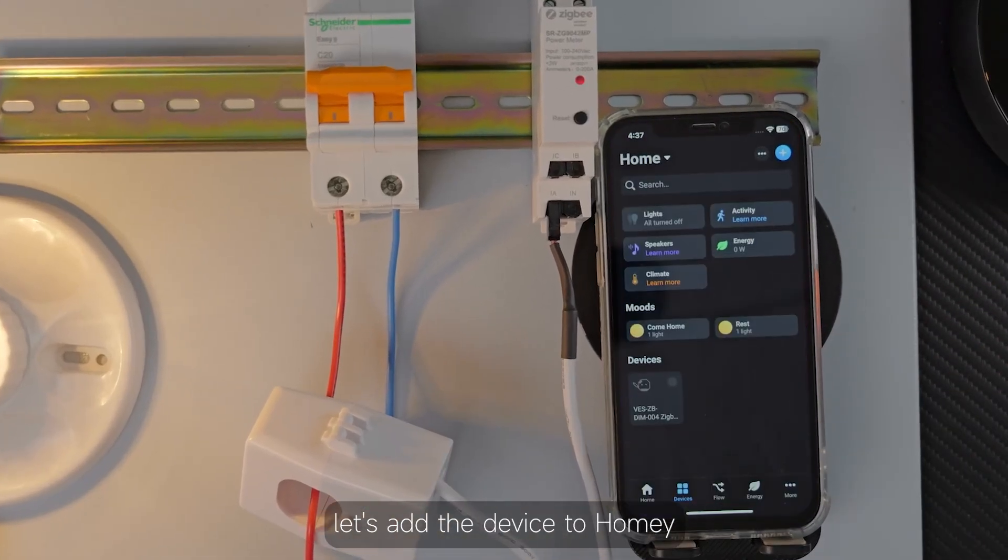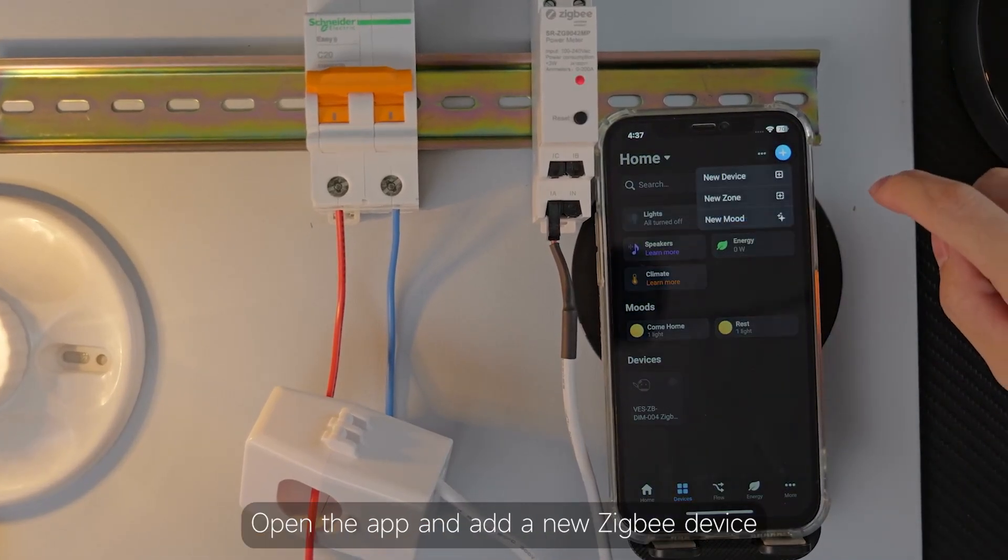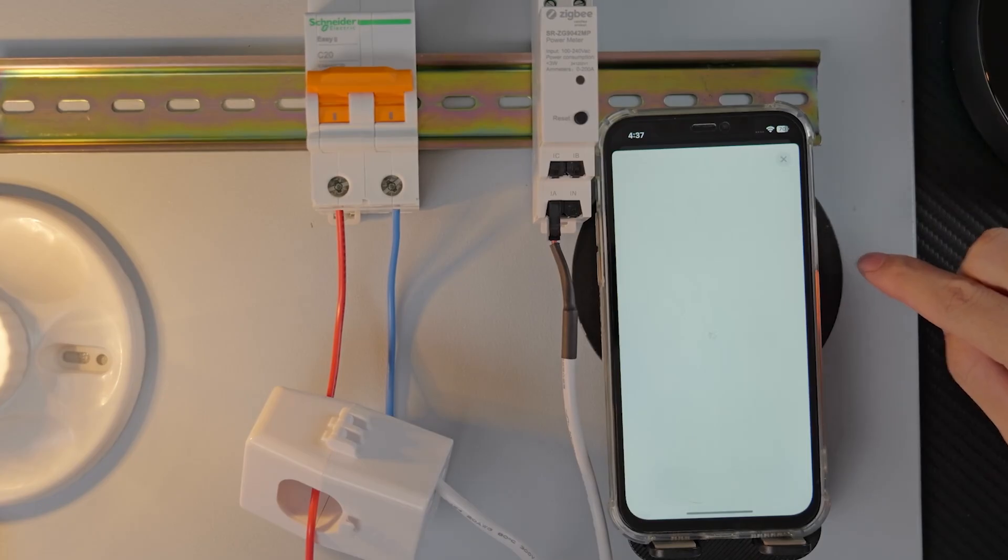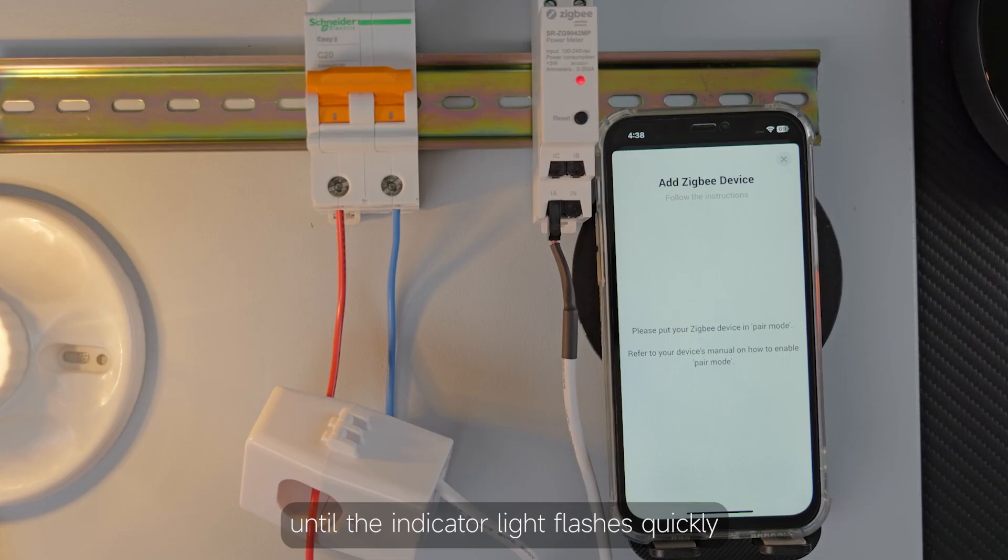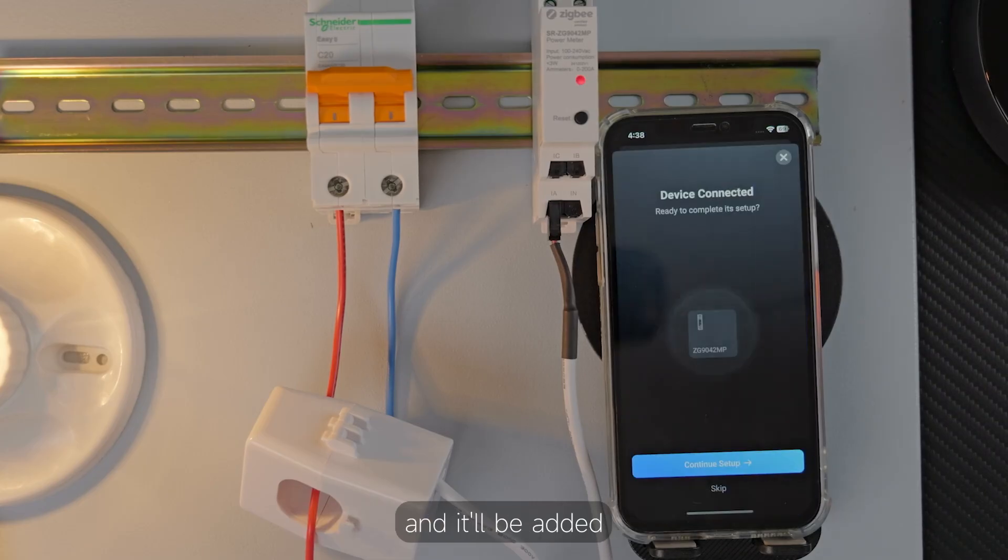Next let's add the device to Homey. Open the app and add a new Zigbee device. Press the reset button on the device five times until the indicator light flashes quickly and it'll be added.